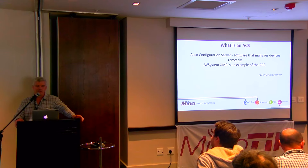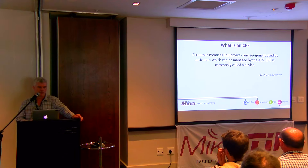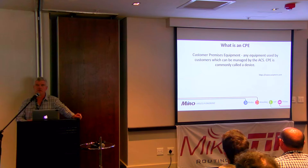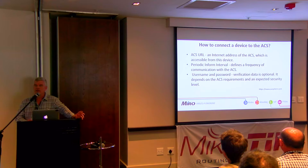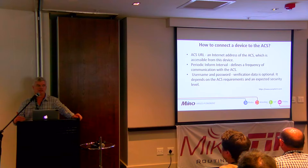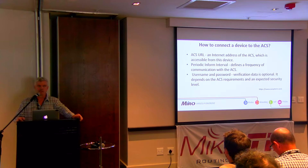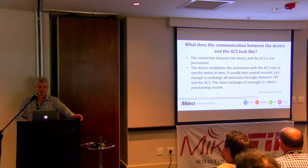The auto-configuration server is the server where everything happens. If you compare it to something like DHCP, the auto-configuration servers have got much more capability. CPE is on the receiving side — that's the piece of equipment you want to configure. On my CPE device, I obviously need the URL where the ACS is going to sit. I'm going to need a period of time, because it's not a permanent connection — it only exists when you need it. For security reasons, there will be usernames and passwords also involved.